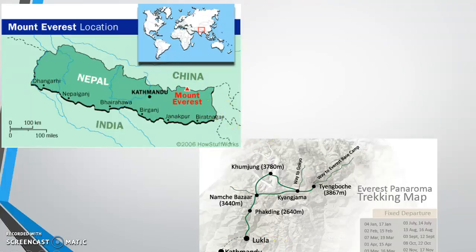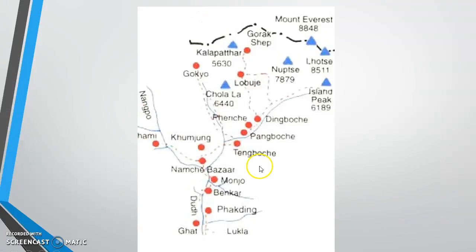Here's a trekking map. You can see from Kathmandu they take the helicopter up to Lukla. Then from Lukla they walk and stop in Pokhang for a bit. Then they make their way up to Everest base camp. On this next map here is Lukla, then Pokhang. And then they talked about Lobuji Village, which is right here. This is their last stop before they get to Everest base camp.